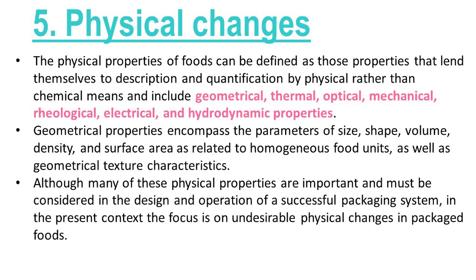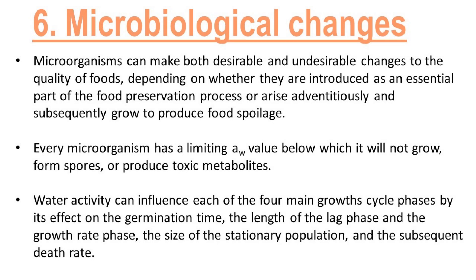Geometrical properties encompass the parameters of size, shape, volume, density, and surface area as related to homogeneous food units, as well as geometrical texture characteristics. Although many of these physical properties are important and must be considered in the design and operation of a successful packaging system, the focus here is on undesirable physical changes in packaged foods. Microorganisms can make both desirable and undesirable changes to the quality of foods, depending on whether they are introduced as an essential part of the food preservation process or arise adventitiously and subsequently grow to produce food spoilage.